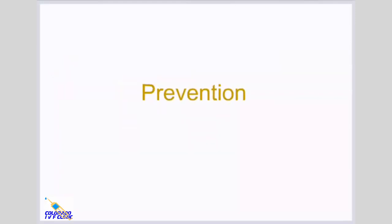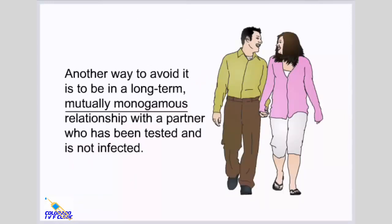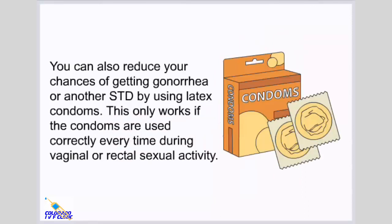Prevention. The best way to avoid getting sexually transmitted diseases is to abstain from sexual contact entirely, including oral or anal sex. Another way to avoid gonorrhea is to be in a long-term, mutually monogamous relationship with a partner who has been tested and is not infected. You can also reduce your chances by using latex condoms correctly every time during vaginal or rectal sexual activity.